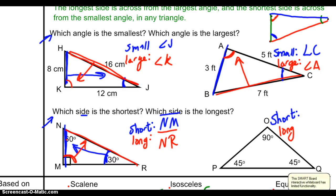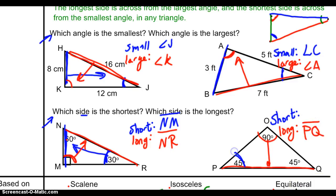This last one is a little different. My longest side is easy to see — here's my biggest angle, and so across from that is my biggest side, my longest side, PQ. But for the shortest side, it's a little confusing because there's a tie: both angle P and angle Q are the same measure, which means the sides across from those will tie for the same length. So PO and OQ tie for the shortest length side of that triangle.